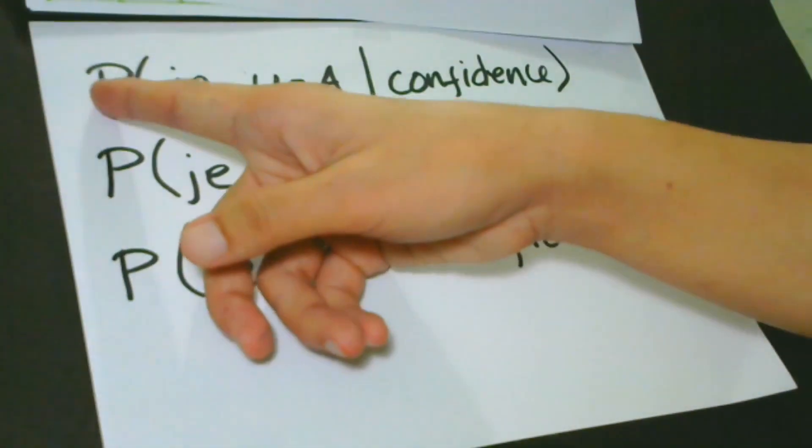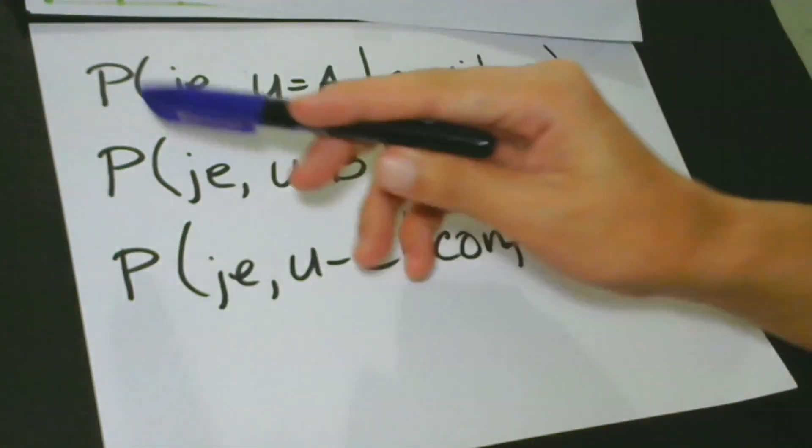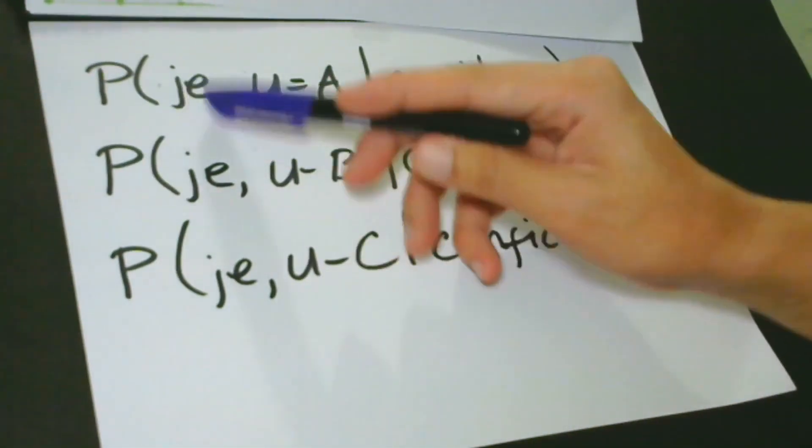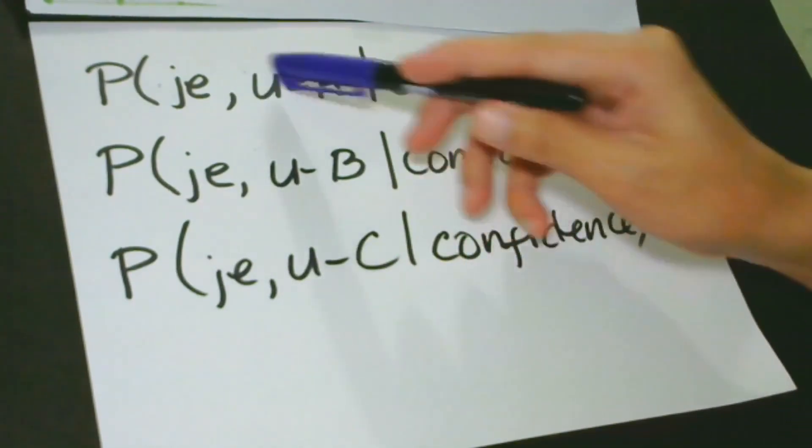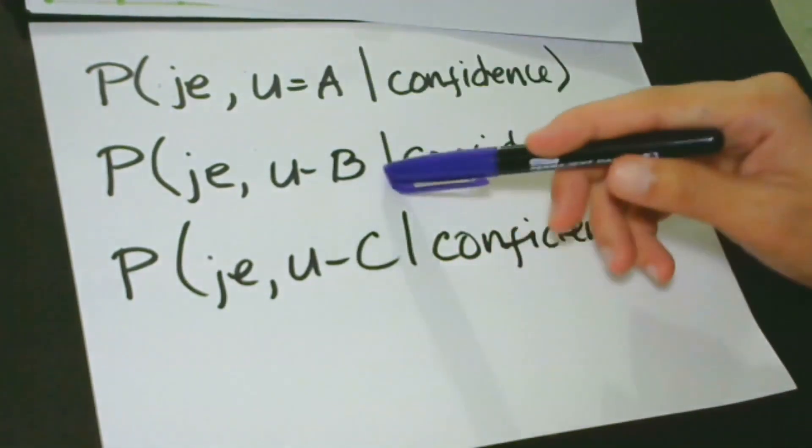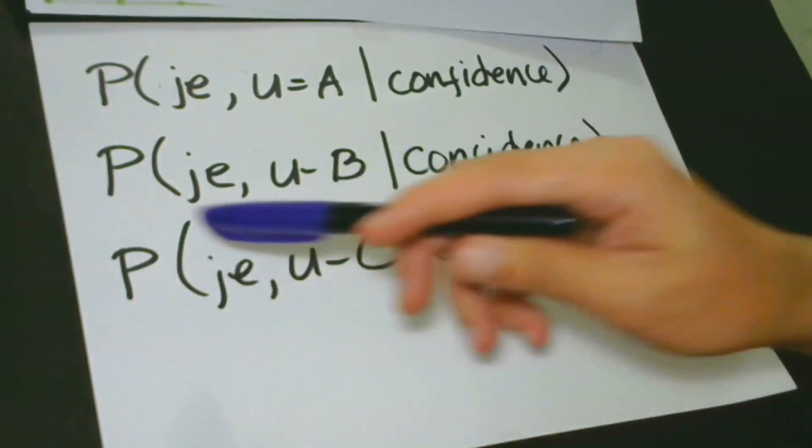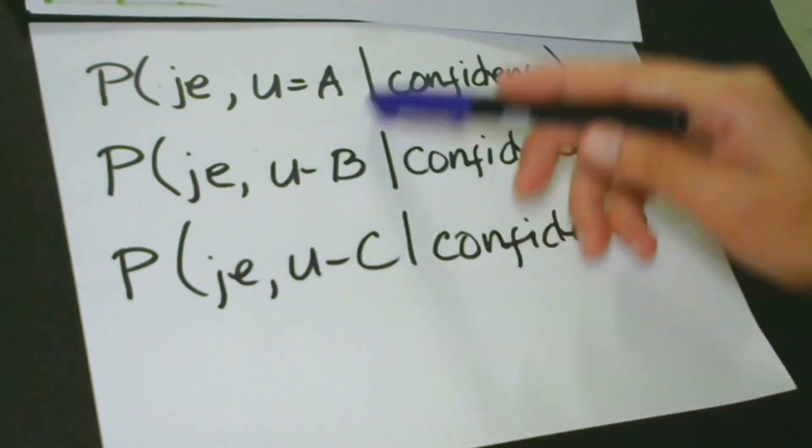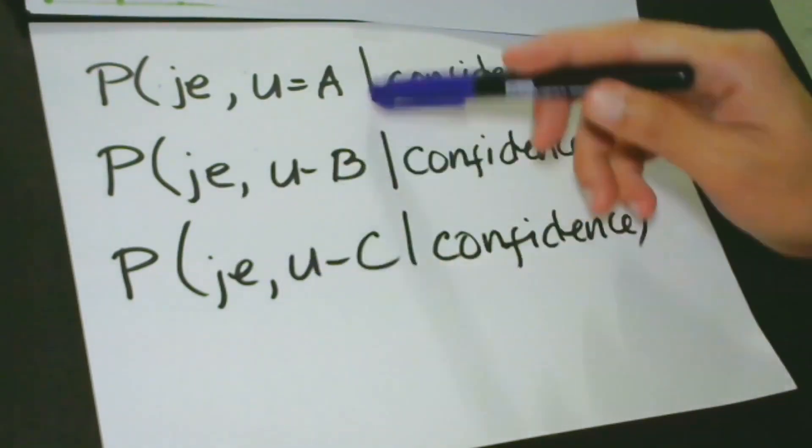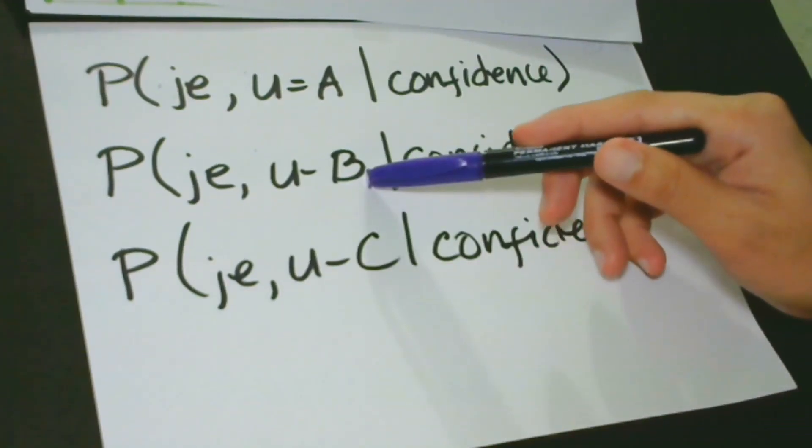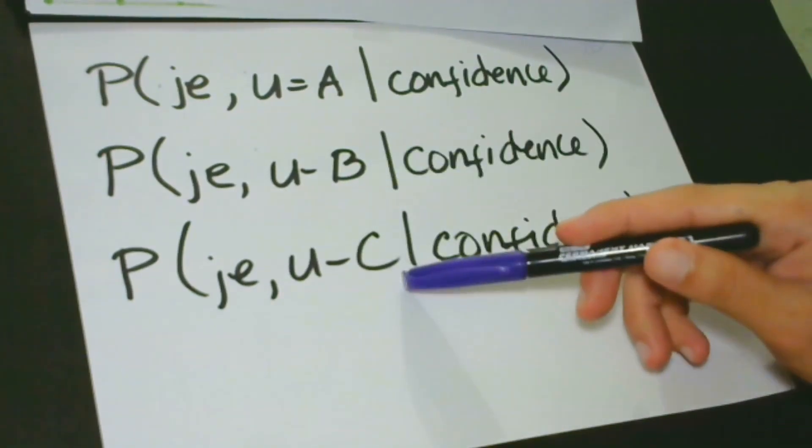The first statement is that the probability of J-E, university, is equal to a given confidence. Here also, the same, but then we have B for the university and C for the university.